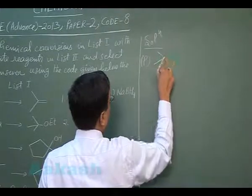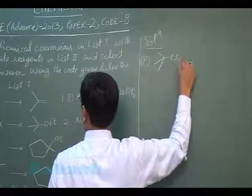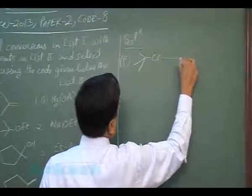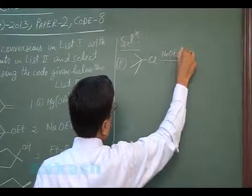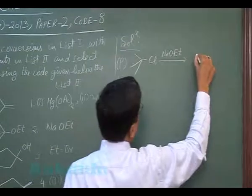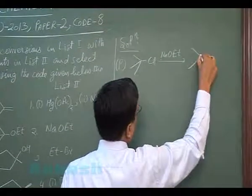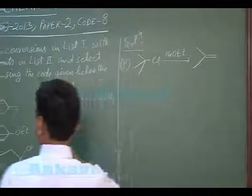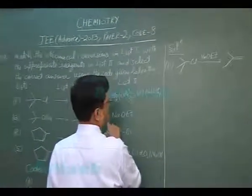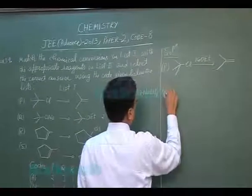Tertiary butyl chloride on reacting with NaOEt, sodium ethoxide, it is the base and it is converted into alkene. So P matches with 2.